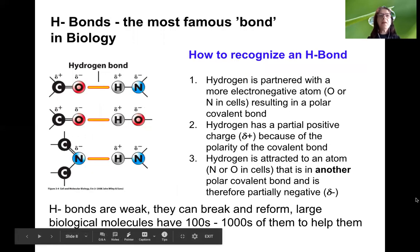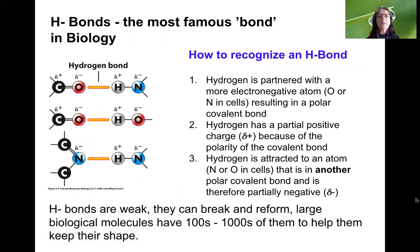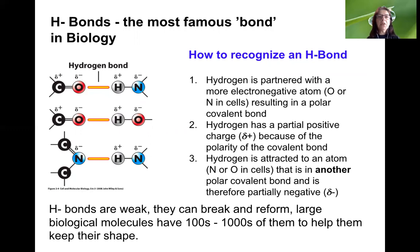Let's talk a little bit about hydrogen bonds. The hydrogen bond is the most famous bond in biology. You can see in the picture three different hydrogen bonds shown in orange. To recognize hydrogen bonds, a hydrogen must be involved. In each case, you have a hydrogen with a partially positive charge — the Greek delta symbol is used to show that the charge is partial, so this is not an ion.